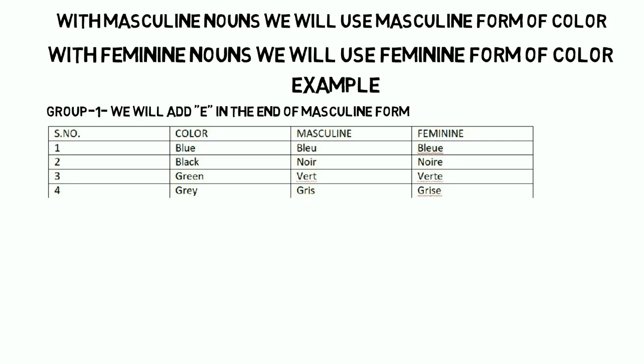The third color is green. Green is vert in the masculine form. And the feminine form will be verte — the 't' will be pronounced because there is an 'e' at the end in the feminine form. The fourth color is grey. Grey in French is gris, and in the feminine form, we add an 'e' at the end. So, to make feminine forms, we add an 'e'. We have learned this.